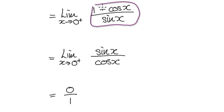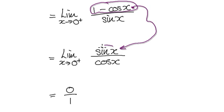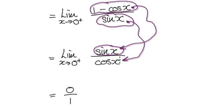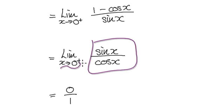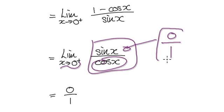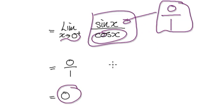Now we can apply L'Hôpital's rule, which means we differentiate the numerator and differentiate the denominator separately. Evaluating the limit again: as x tends to 0 from the right hand side, the numerator will be 0 and the denominator will be 1. So nothing breaks down — 0 divided by 1 is a perfectly legitimate number. Therefore the limit is actually 0.